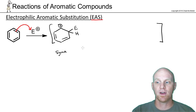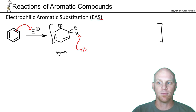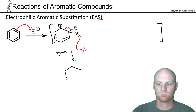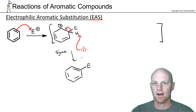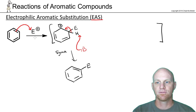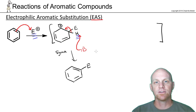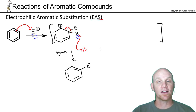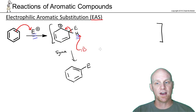The second step is simply deprotonation. A base comes in — it depends on the specific reaction — and deprotonates, which restores aromaticity. We get our aromaticity back, and now there's an electrophile right where the hydrogen used to be. So first, we brought in the new electrophile, then out with the old hydrogen. It's not like SN2, which is simultaneous, nor like SN1, where you lose the leaving group first. Here, we bring in the new group first and lose the hydrogen second.